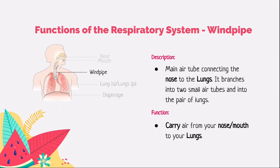Let's begin with the function of the windpipe. The windpipe is the main air tube connecting the nose to the lungs. It branches into two small air tubes leading into the pair of lungs. Like a mini tunnel, the windpipe's primary function is to transport air from your nose or mouth to your lungs.